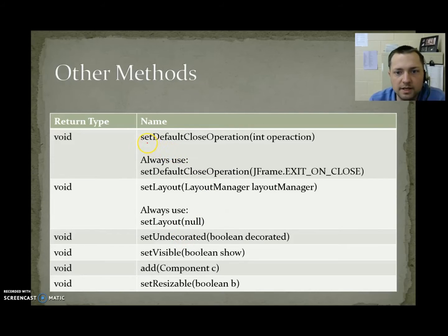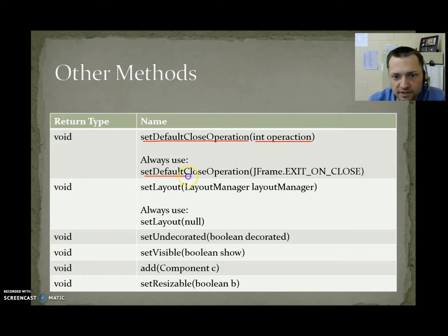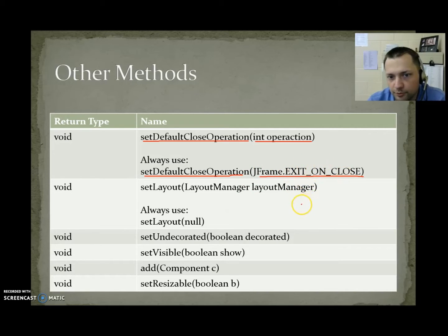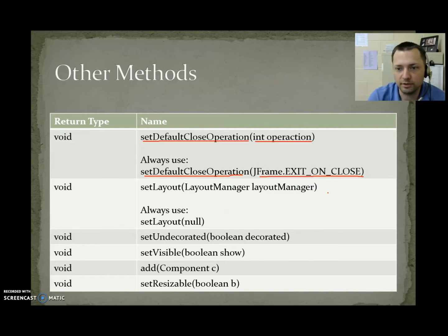Other important methods: setDefaultCloseOperation determines what happens when you click X. We're always going to use setDefaultCloseOperation(JFrame.EXIT_ON_CLOSE). This makes it so when the user clicks X, it kills the program. Without this, clicking X leaves the program still running and wasting memory, so this is very important to always include.